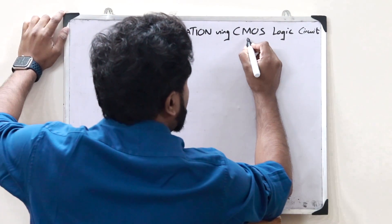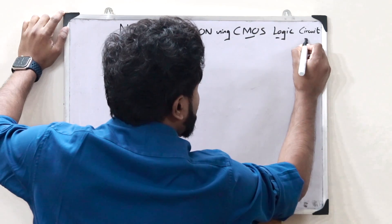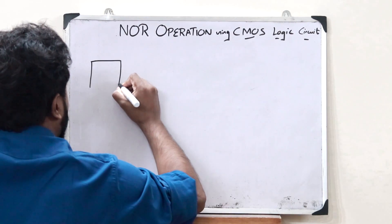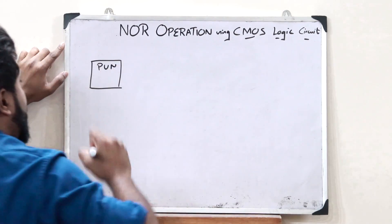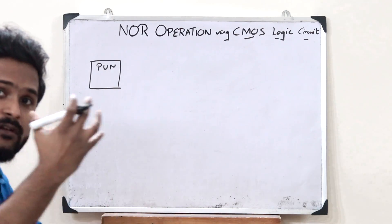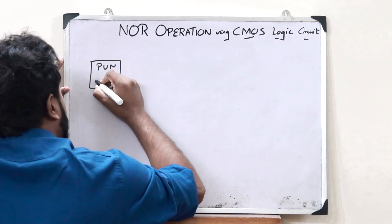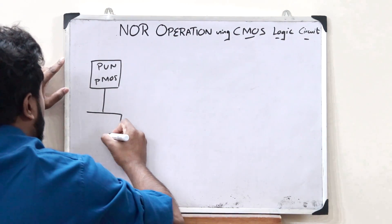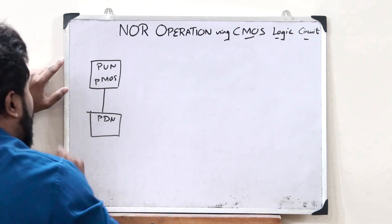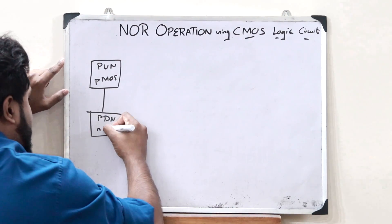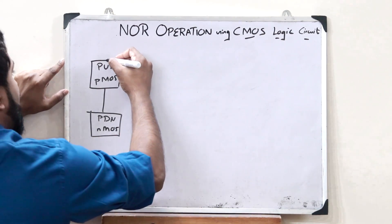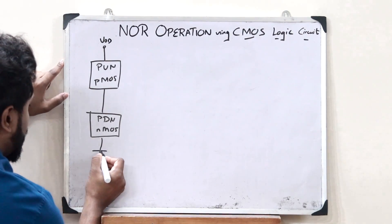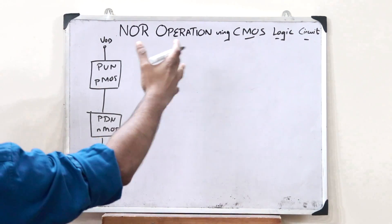We know for a fact that in the case of CMOS logic circuits, it has got two components. First, it would have a pull-up network, and this pull-up network is made up of PMOS transistors. It would also have another component referred to as the pull-down network, and this pull-down network consists of NMOS transistors. This is connected to VDD and the other end is connected to ground. This is a CMOS logic circuit.